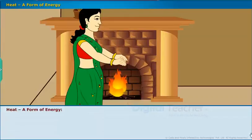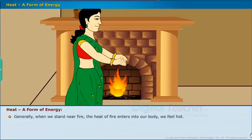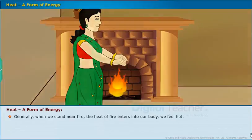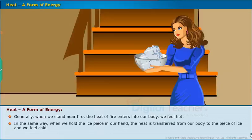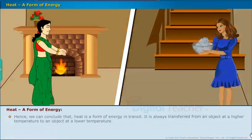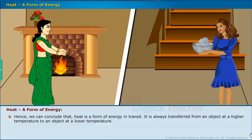Let us discuss heat. Generally, when we stand near fire, the heat of fire enters into our body and we feel hot. In the same way, when we hold a piece of ice in our hand, the heat is transferred from our body to the ice and we feel cold. Hence, we can conclude that heat is a form of energy in transit, always transferred from an object at a higher temperature to an object at a lower temperature.